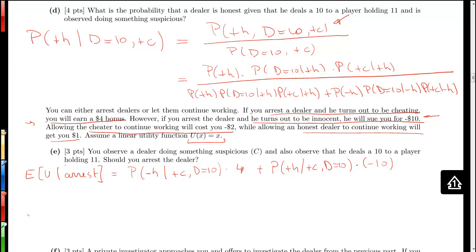And we'll compare that with the expected utility of no arrest, which is the probability of a dishonest dealer times the payoff for not arresting. If we did not arrest a dishonest dealer, it will continue working and it will cost you $2. Then we get the probability of the honest dealer given that we saw something suspicious and a 10 was dealt, times the payoff for not arresting the honest dealer, which is 1.